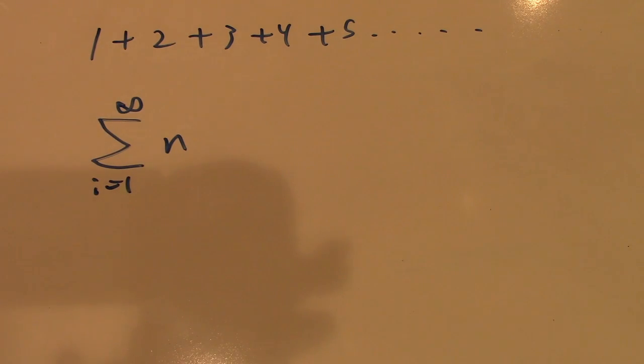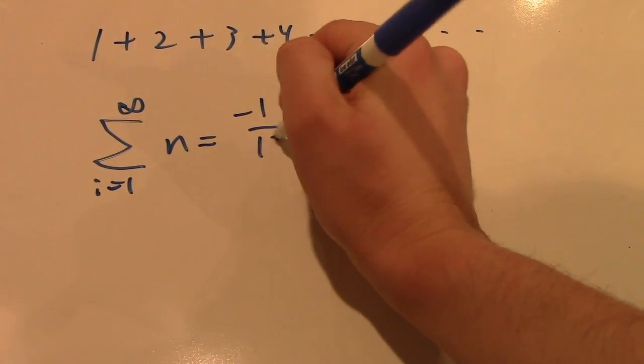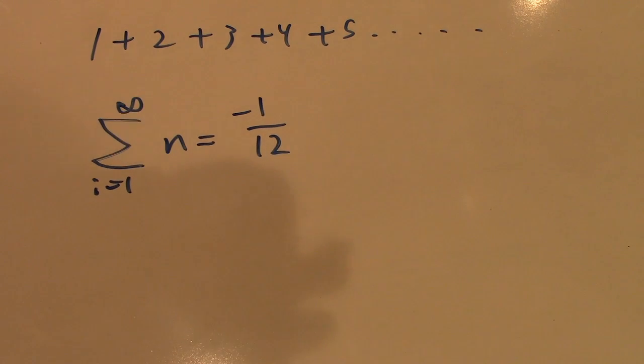Now, if you were to guess the answer to this sum, you would logically conclude that it is infinity, which makes logical sense. However, it is not. In fact, the answer to this is negative 1 twelfth. Yes, by summing all of the positive integers, we get a negative fraction.